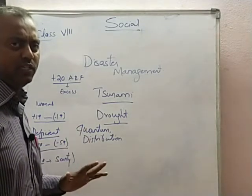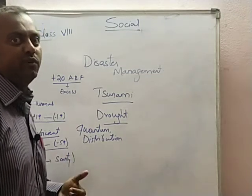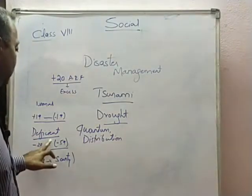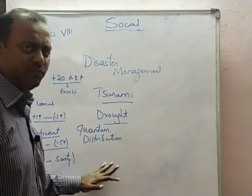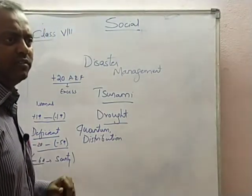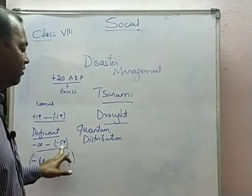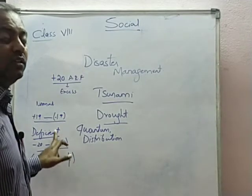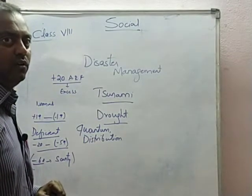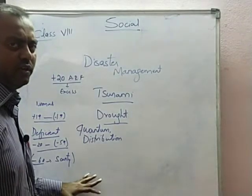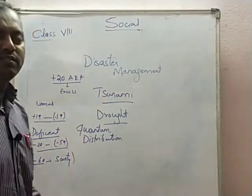For example, if 100 centimetres is the average but this time it is 90 centimetres, then it is called normal rainfall. Similarly, 110 centimetres is also called normal rainfall. If it is 20% below the average rainfall, then it is called deficient rainfall — minus 20 to minus 59 is deficient rainfall. And if it is minus 60 or below, then it is called scanty rainfall.